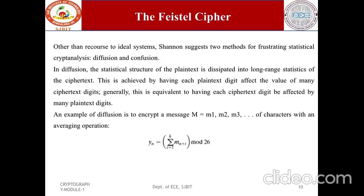In a binary block cipher, diffusion can be achieved by repeatedly performing some permutation of the data followed by applying a function to that permutation, so bits from different positions in the original plaintext contribute to a single bit of ciphertext. Confusion seeks to make the relationship between the statistics of the ciphertext and the value of the encryption key as complex as possible, to thwart attempts to discover the key even if the attacker has some handle on ciphertext statistics.